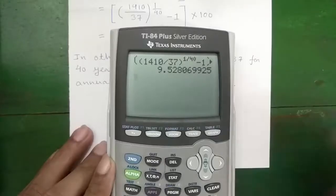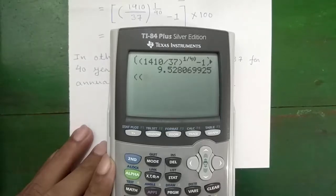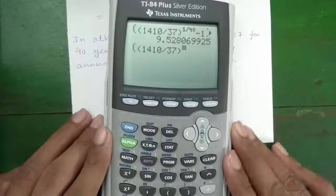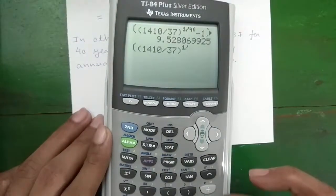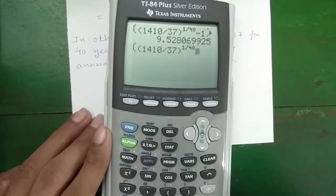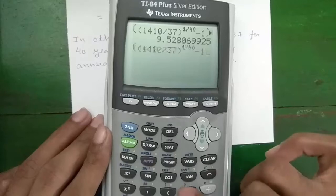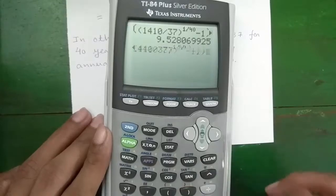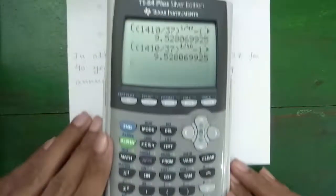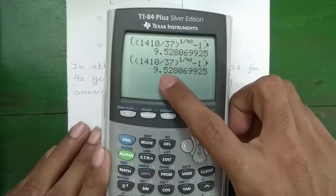Let's do it on calculator. Press left parenthesis two times, 1410 divided by 37, right parenthesis. Then this to the power button, 1 divided by 40. Scroll right, minus one right parenthesis into hundred and press the enter button. So the CAGR is 9.52 percent.